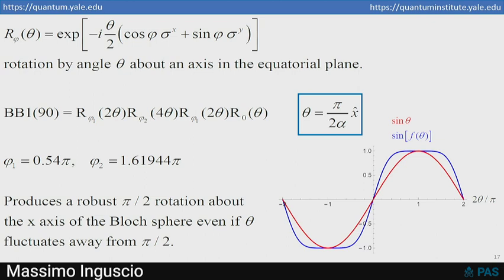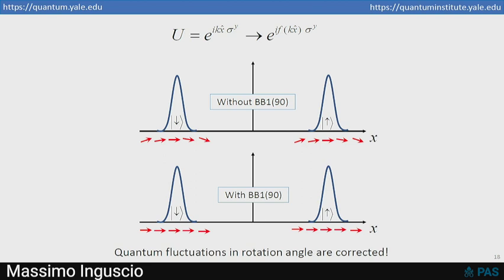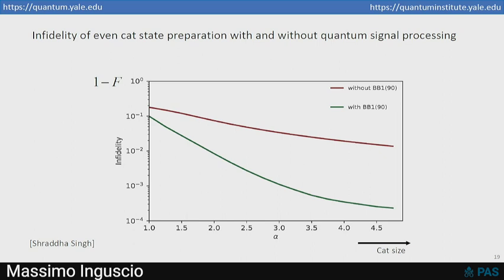And any error that occurs in R0 is compensated by the errors that occur in the other three gates, and you end up producing a very accurate pi over 2 rotation. You see in the graph, as a function of the rotation angle theta, you see the red curve is sine theta, and the blue curve is the sine of the rotation angle produced by the robust pulse. And you see it's very flat-topped. Even if there are large fluctuations in theta around pi over 2, you still get a rotation very close to that. And so even though these are quantum fluctuations, they're all x-hat. So they all commute with each other, and you can just take over this classical robust control sequence and just cancel out those small residual entanglement between the spin and the cavity, therefore producing a cat state whose fidelity for medium values of alpha is one to two orders of magnitude—the infidelity is one to two orders of magnitude smaller than before. So it actually works.